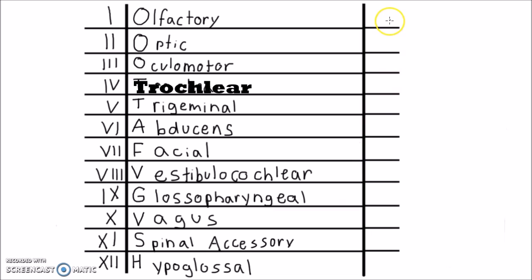The next mnemonic covers the function of the nerves in the same manner as before: Some say money matters, but my brother says big brains matter more. S stands for sensory, M stands for motor, and B stands for both.